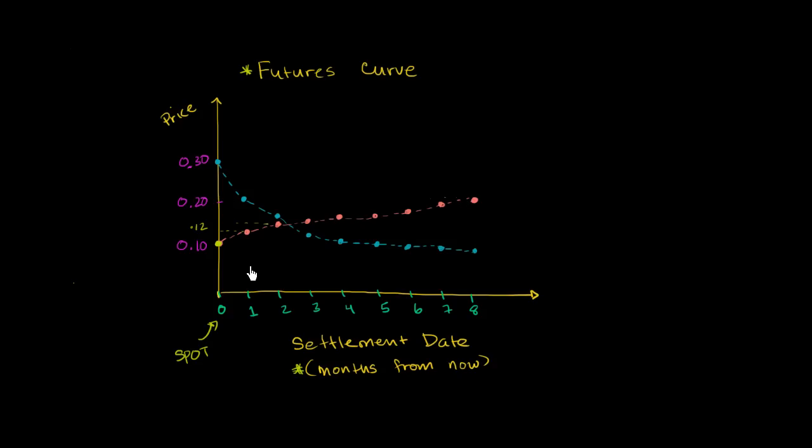If you wanted to show movement, let's say all of a sudden people just get more bullish on apples or there's some new diet that tells everyone that apples help you lose weight. What you would probably see is this entire curve would shift up. So regardless of delivery date, you would probably see this entire curve shift up because people would want apples across the entire futures curve.